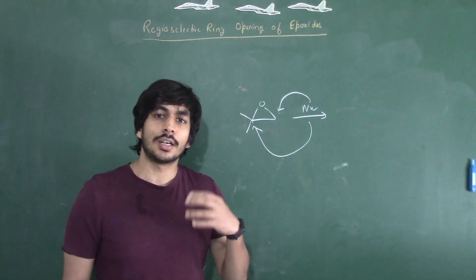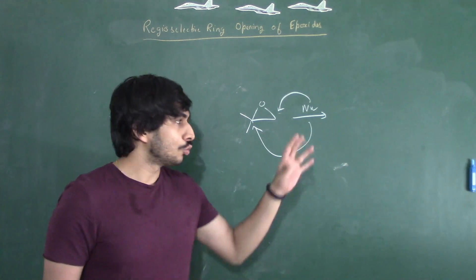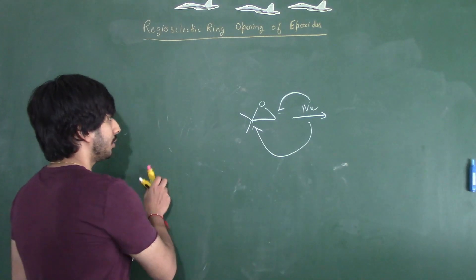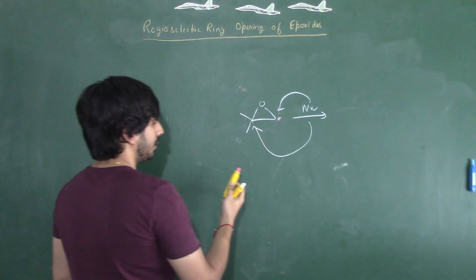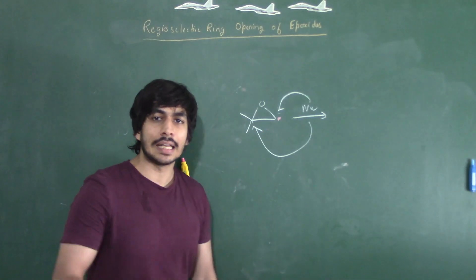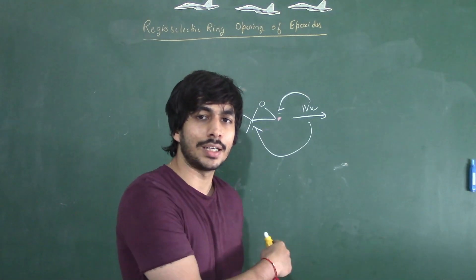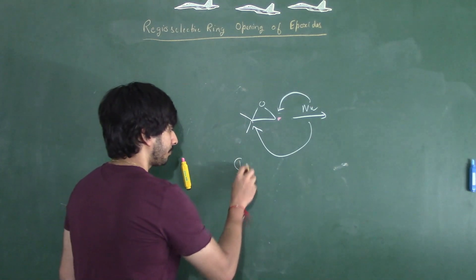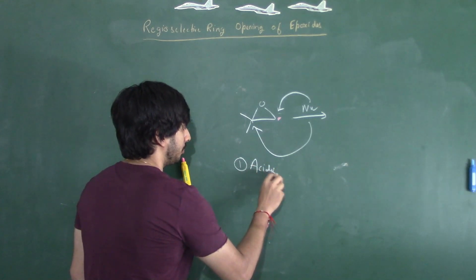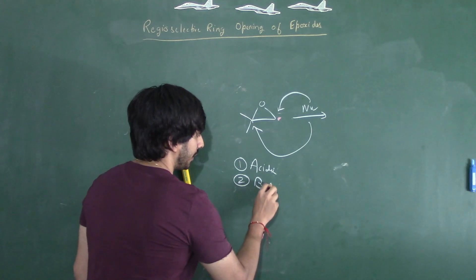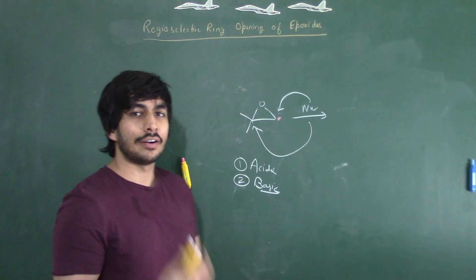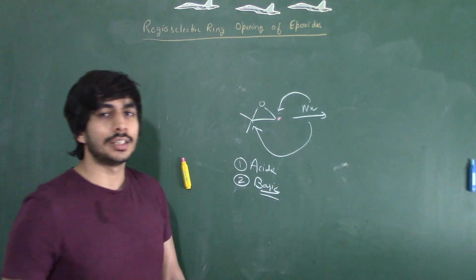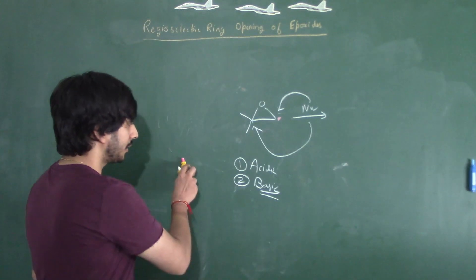This actually depends upon the conditions. Generally, a nucleophile will always prefer to attack the less hindered side — this one over here is the less hindered side. That is the general tendency of any nucleophile. Now please remember two conditions: one is acidic and the other is basic. In basic conditions, the nucleophile will have its normal tendency of attacking the less hindered side.